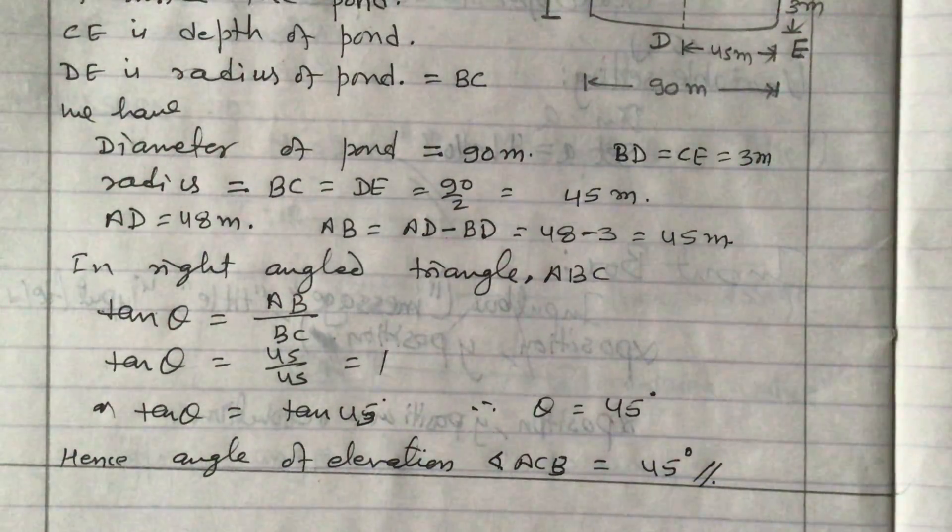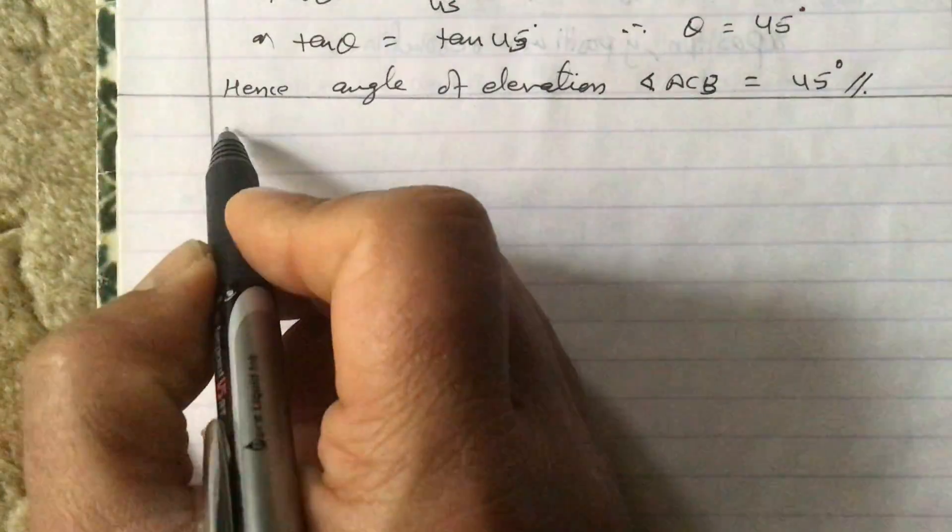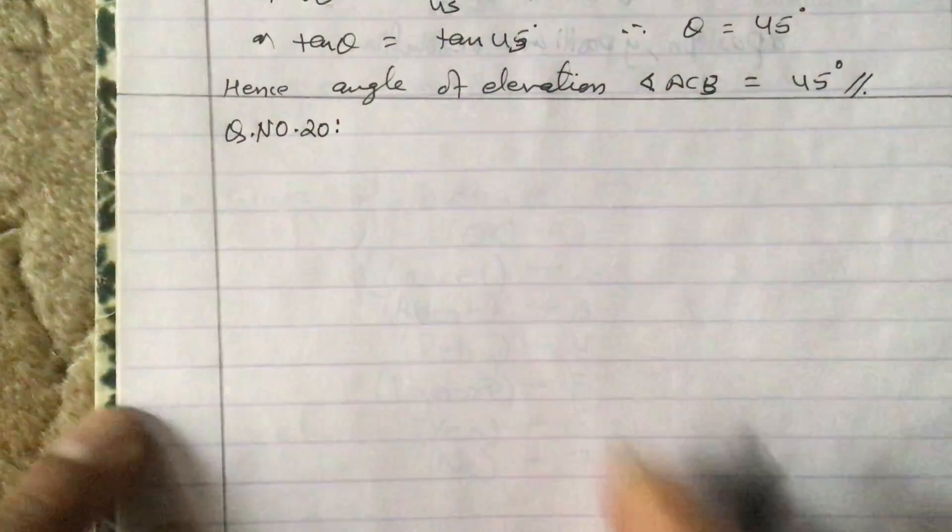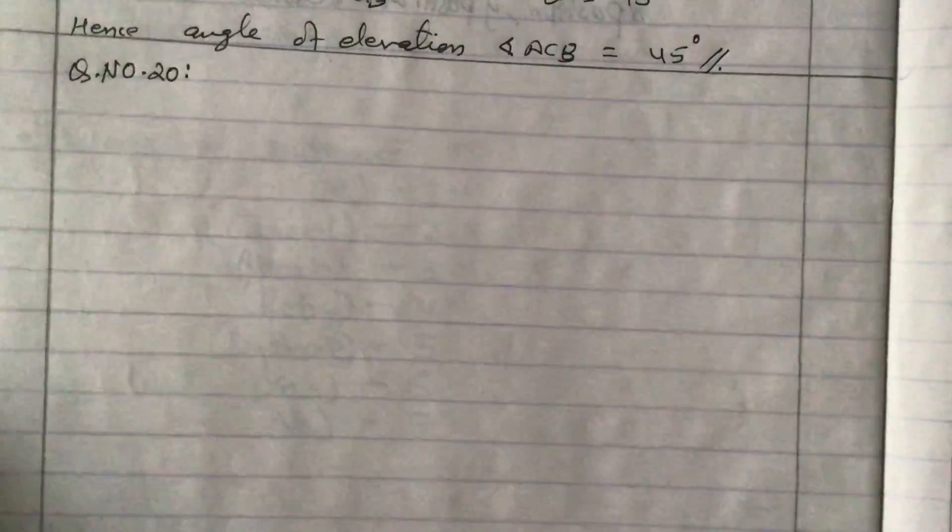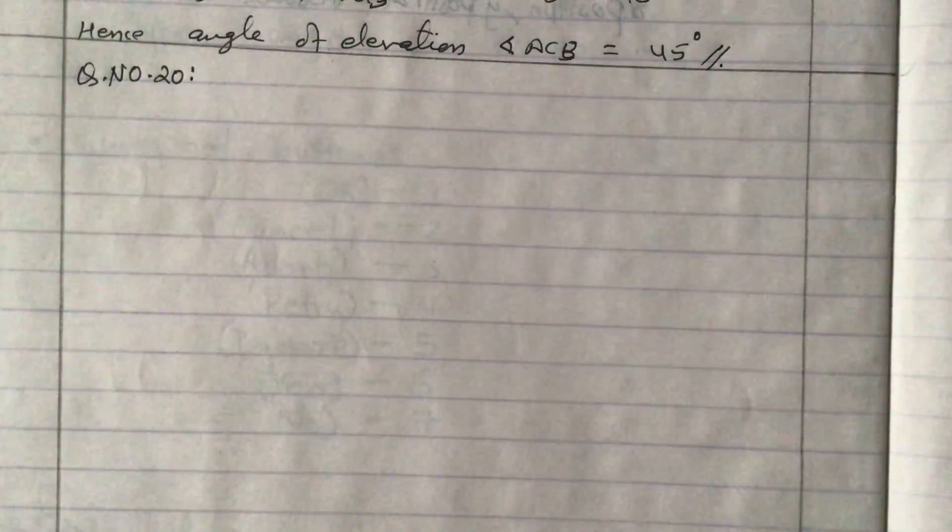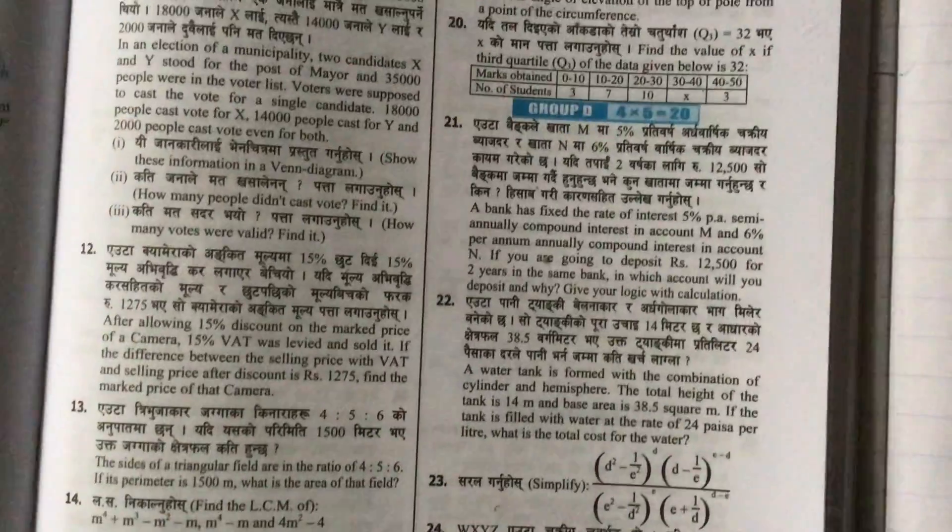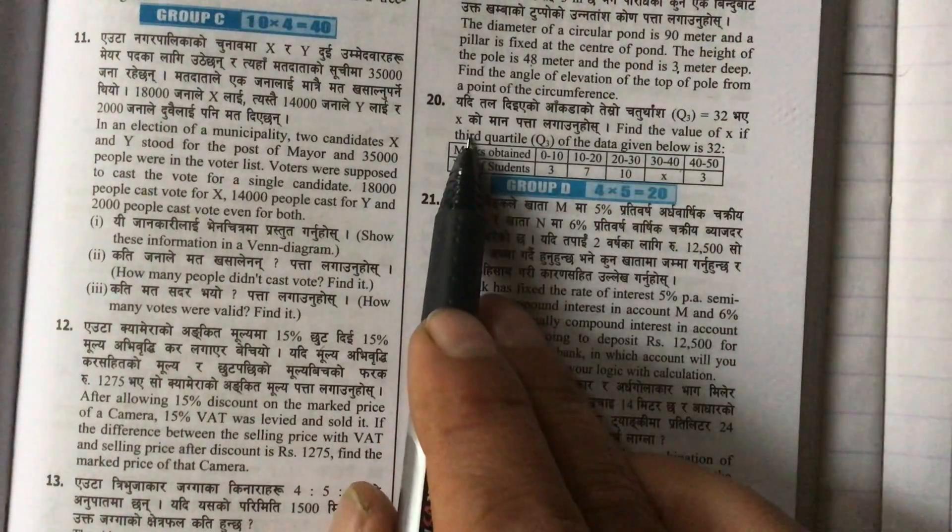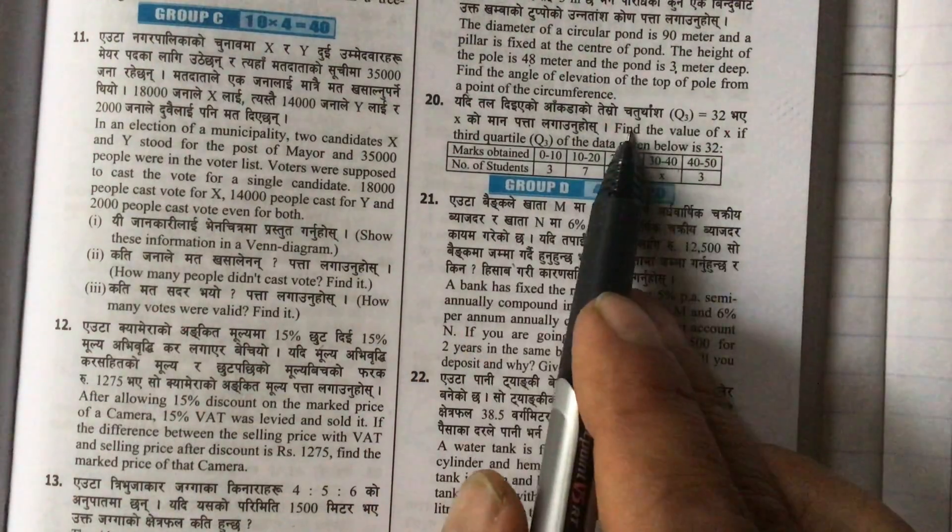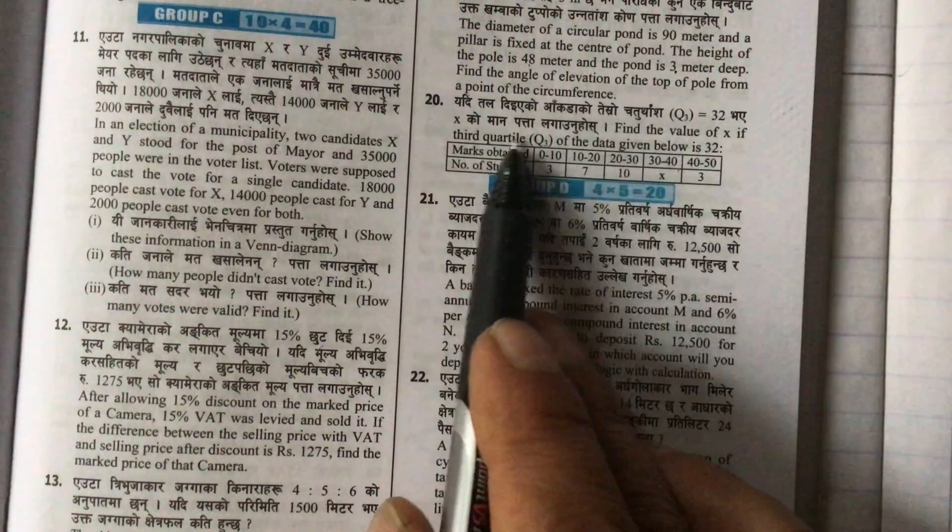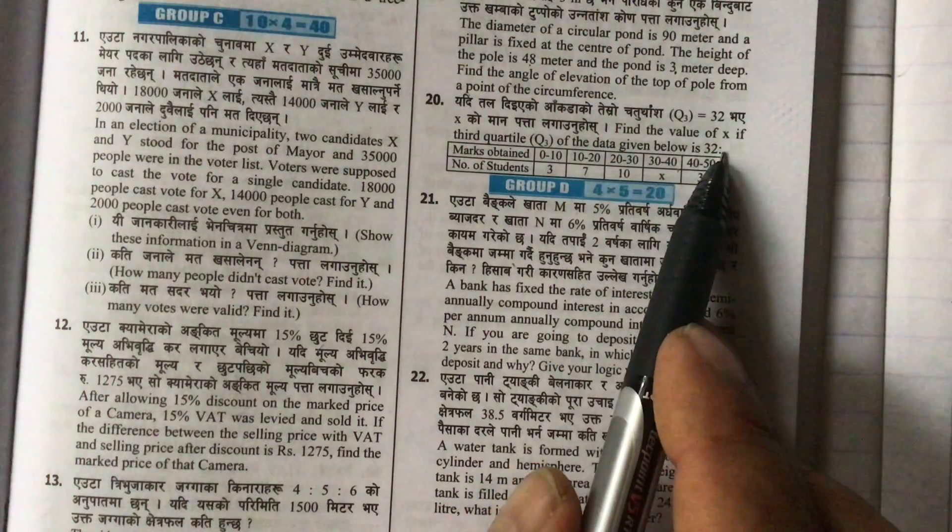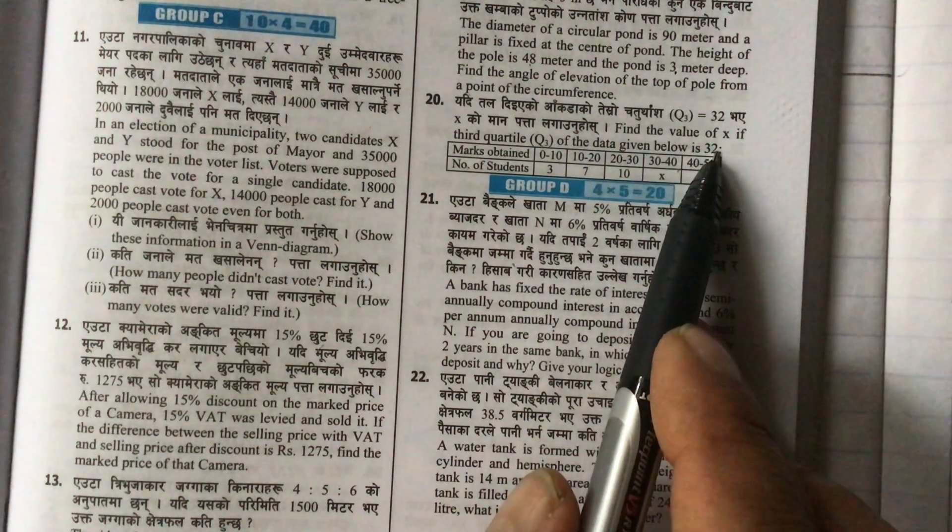Okay, now we will start question number 20. In question number 20, the question is to find the third quartile. Find the value of x if the third quartile Q3 of the data given below is 32. 32 is the third quartile, and we are asked to find the value of x.